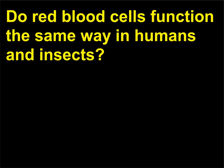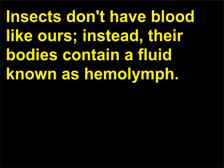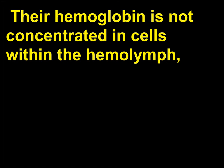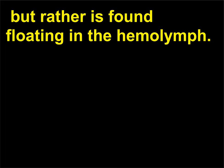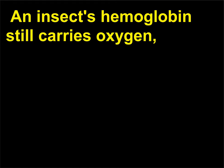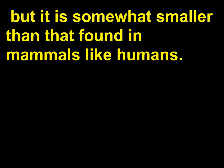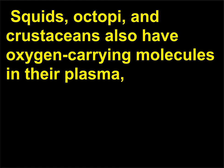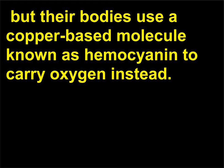Do red blood cells function the same way in humans and insects? In insects, hemoglobin is not concentrated in cells within the hemolymph, but rather is found floating in the hemolymph. An insect's hemoglobin still carries oxygen, but it is somewhat smaller than that found in mammals like humans. Squids, octopi, and crustaceans also have oxygen-carrying molecules in their plasma, but their bodies use a copper-based molecule known as hemocyanin to carry oxygen instead.